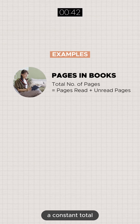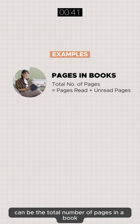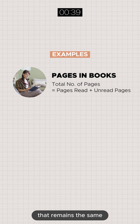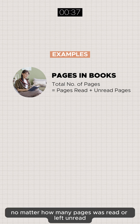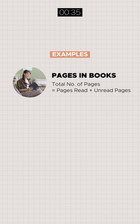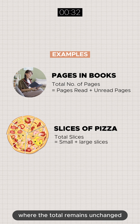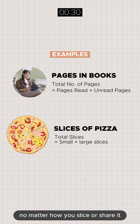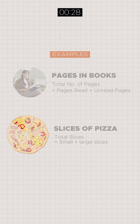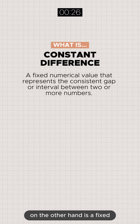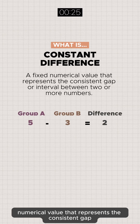A constant total can be the total number of pages in a book that remains the same no matter how many pages were read or left unread. Another example is that of pizza slices, where the total remains unchanged no matter how you slice or share it.